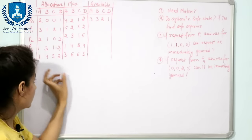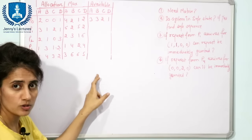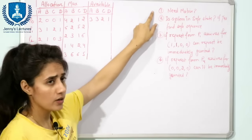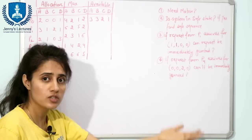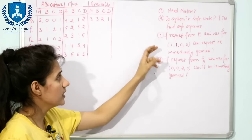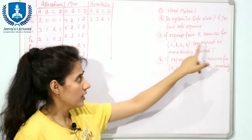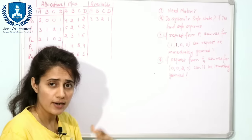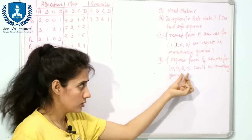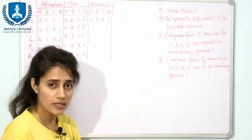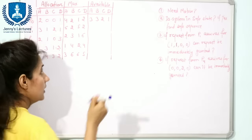In this snapshot, we are given the maximum allocation and available resources. We have to answer these questions: first, find out the need matrix; second, find out if the system is in a safe state, and if yes, find the safe sequence; third, check if a request from P1 for certain resources can be granted immediately; and fourth, if a request from P4 arrives, can that request be granted immediately.